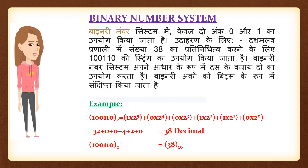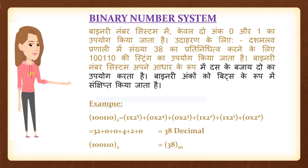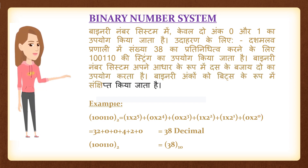Binary number system mein, keval dho ank 0 aur 1 ka upyog kiya jata hai. Udaharan ke liye, dashamlav pranali mein sankhya 38 ka pratinidhitwa karta hai, 1110 ki string ka upyog kiya jata hai. Binary number system apne aadhar ke rup mein 10 ke bajaye 2 ka upyog karti hai. Binary ankon ko bits ke rup mein sankshipt kiya jata hai.